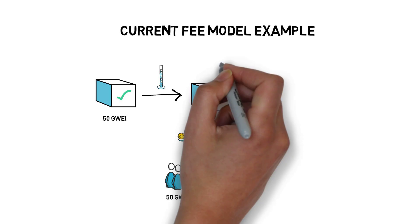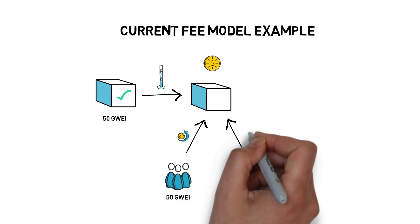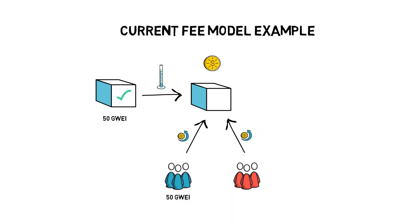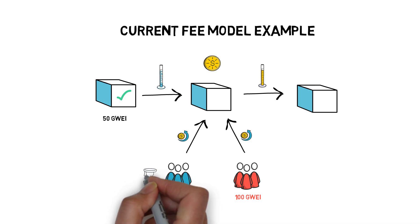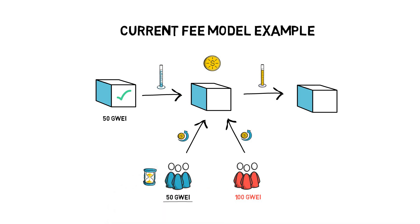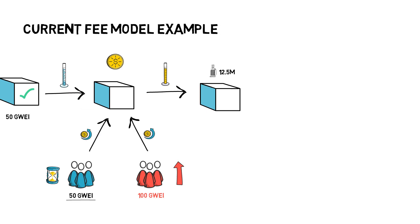At the same time, a new highly anticipated token is launched, causing users who want to buy it to dramatically increase their bids. Now, to be included in the next block, the minimum required fee is 100 gwei. If the network activity remains high for multiple subsequent blocks, users who already submitted their transactions with 50 gwei may wait for their confirmations for a very long period of time. The block size is capped at 12.5 million gas and the only way to get into a block is to bid higher than other users.